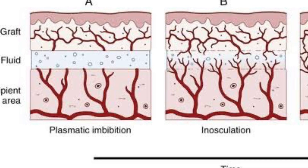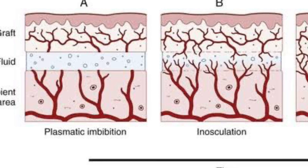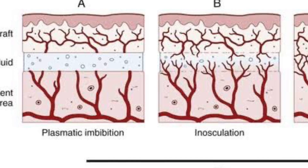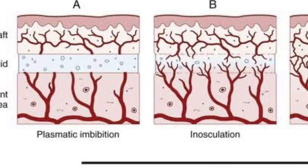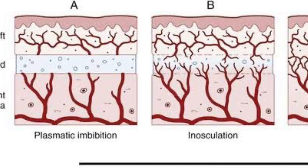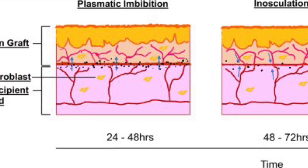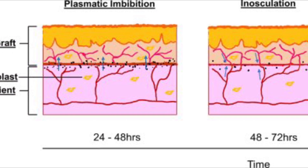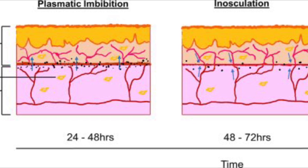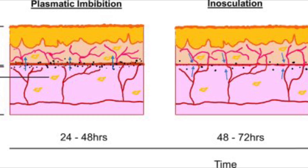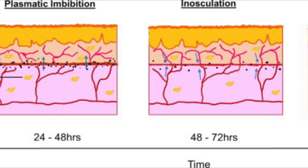The first stage is skin graft adherence, the second stage is serum imbibition, the third stage is revascularization, and the fourth stage is remodeling. Skin graft adherence is an immediate process, serum imbibition is about 24 to 48 hours, revascularization is about 48 hours to 3 weeks, and remodeling takes place from about 3 weeks to 1 year.